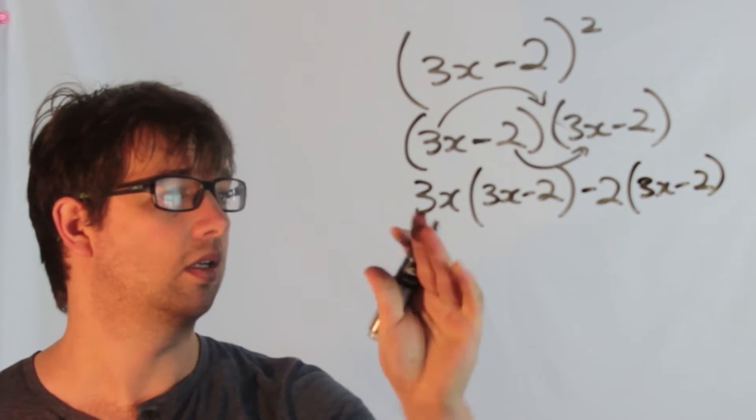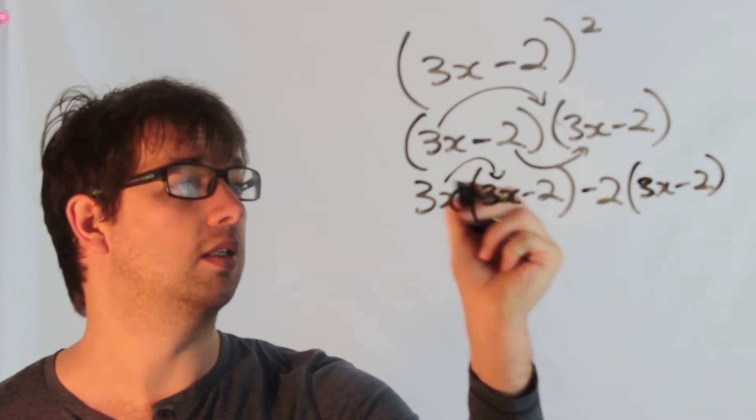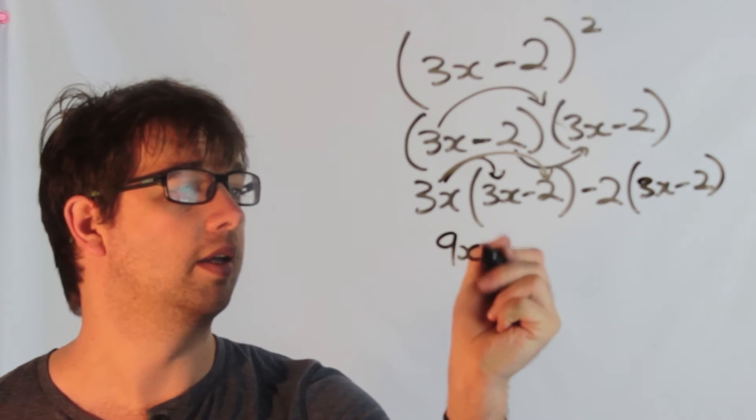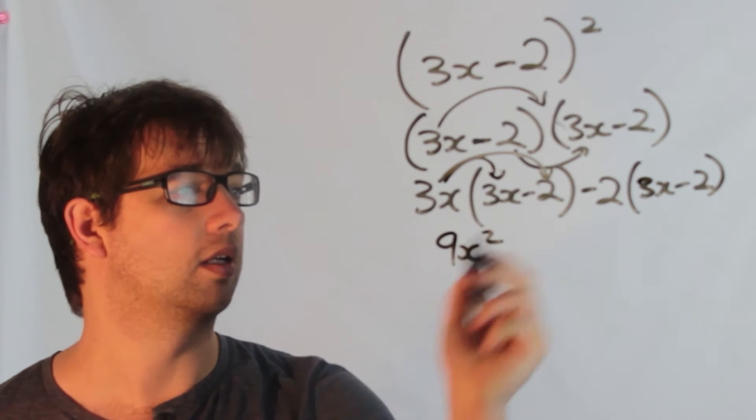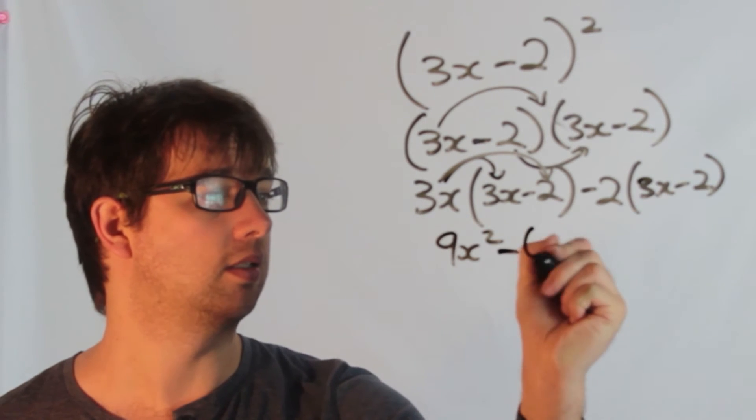And we can expand those out individually. So if I expand these ones in, 3x times 3x, that's 9x squared. 3x times minus 2 is minus 6x.